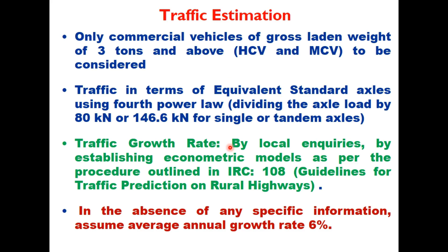Traffic in this code is considered in terms of equivalent standard axles, obtained using the fourth power law — by dividing the axle load by 80 kN or 146.6 kN for single and tandem axle loads respectively, then raising to the power of four. Traffic growth rate is estimated either through local inquiries or by establishing econometric models as given in IRC 108.